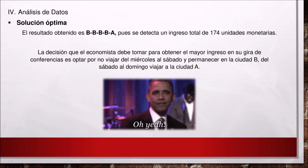Análisis de datos. Solución óptima: el resultado obtenido es BBBBA, pues se detecta un ingreso total de 174 unidades monetarias. La decisión que el economista debe tomar para obtener el mayor ingreso en su gira de conferencias es optar por no viajar del miércoles al sábado y permanecer en la ciudad B, y del sábado al domingo viajar a la ciudad A.